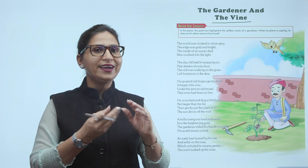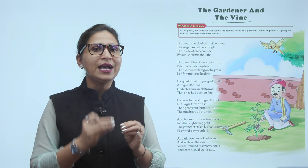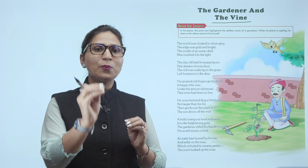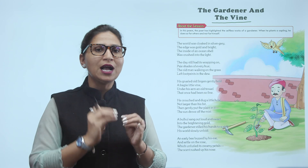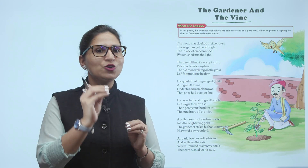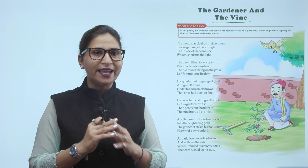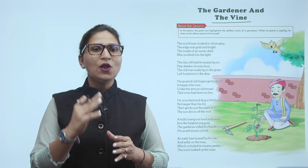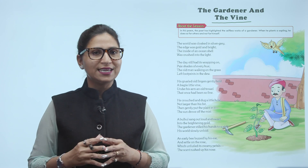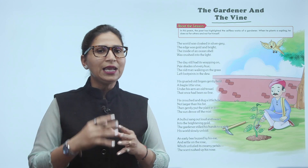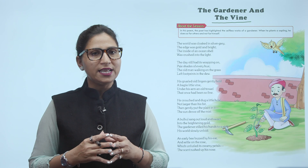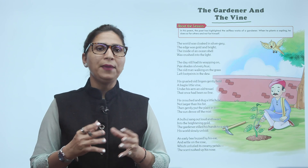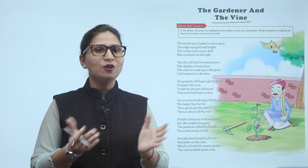Toh kaisi under his arms — usne arms mein kya liya hai? Ek trowel — ek instrument hai, usko rakha hua hai, jo kaisa baut fine nazar aa raha hai. He crowned and dug a little hole, not larger than his face. Then gently put the plant in it. The sun drove off the mist.